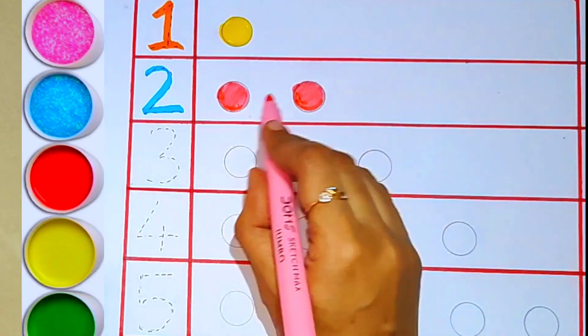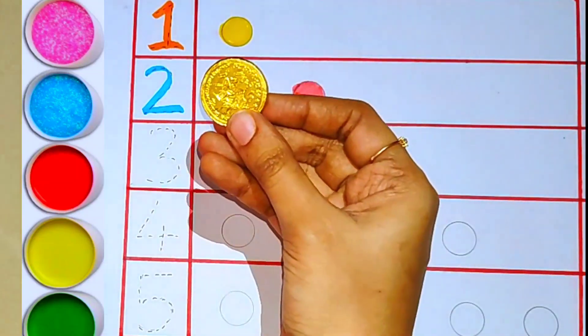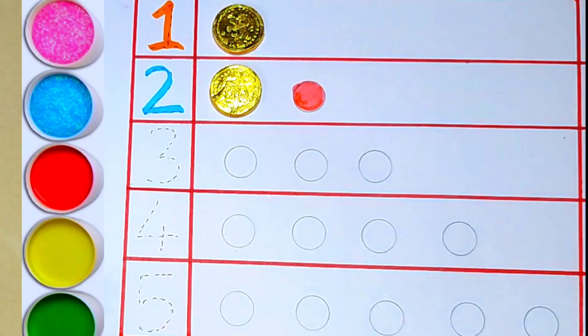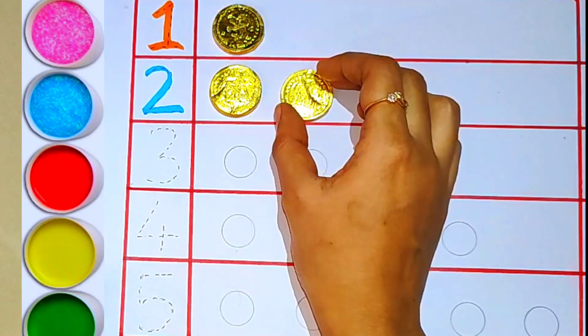Number two, pink color. One, two - two balls. One coin, one, two - two coins.